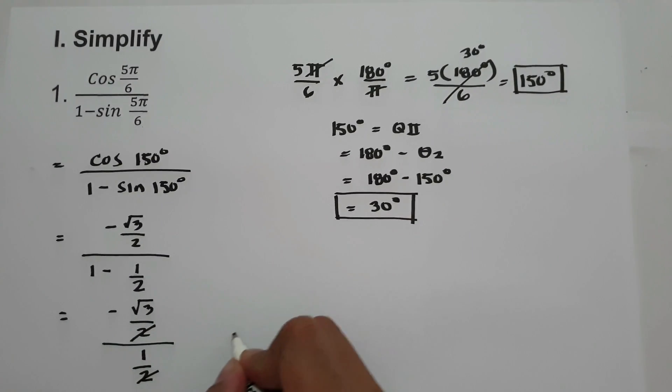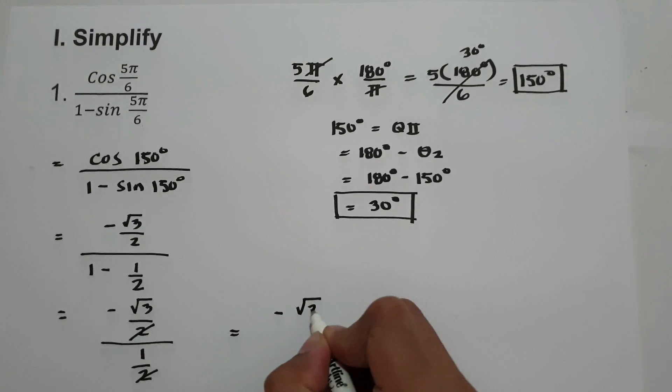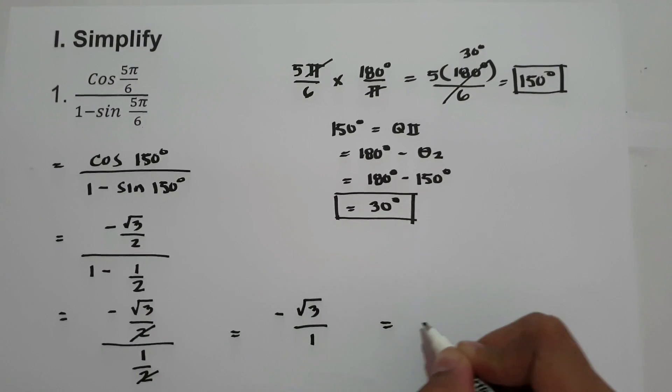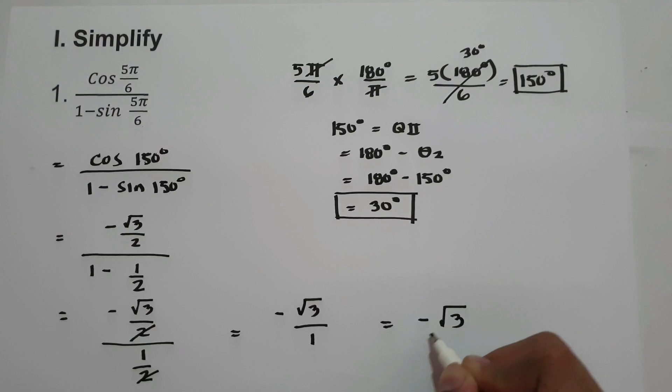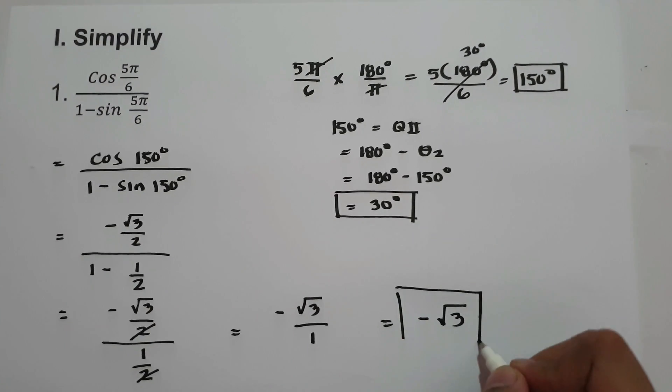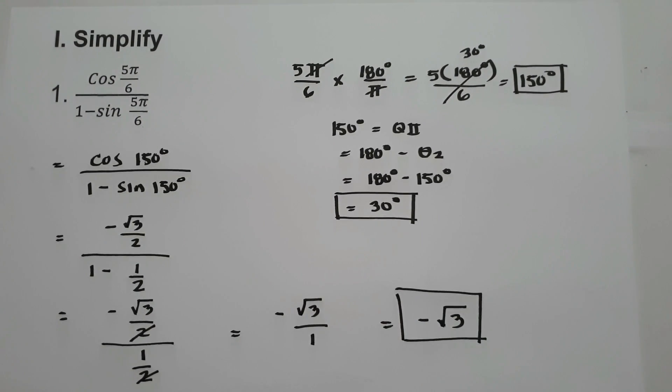Let us cancel this. We have negative square root of 3 over 1, that is negative square root of 3. So this will be our final answer. Thank you.